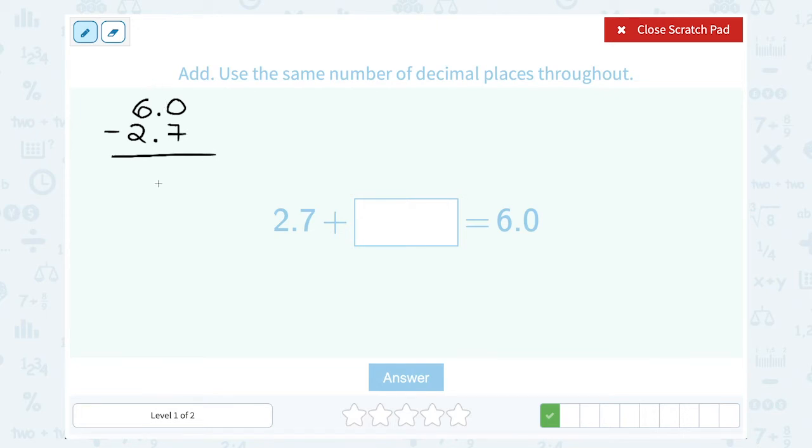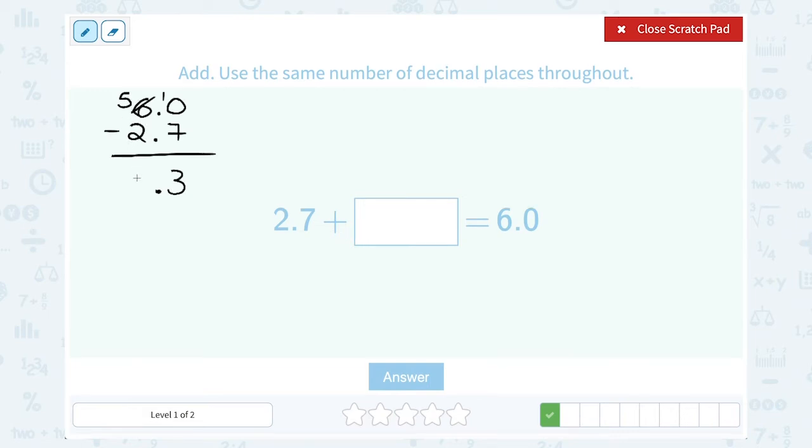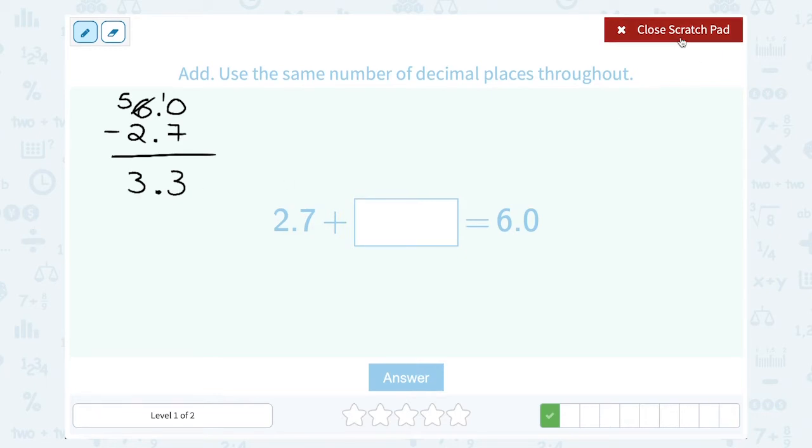Just like before, I'm going to make sure to line up my decimal points. And then here, since I would have 0 minus 7, I'm going to borrow 1 from the ones place. And I'm going to think of that as 10 minus 7, which gives me 3. Since I changed this to a 5, I now have 5 minus 2 in the ones place, which also gives me 3. So 3.3 must be the missing number.